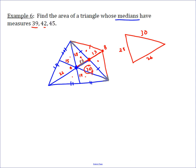So using Heron's formula, my semiperimeter turns out to be 42. So the area equals the semiperimeter times semiperimeter minus each of these, so 12, 14, and 16.